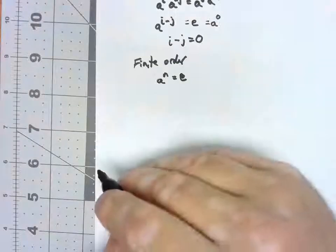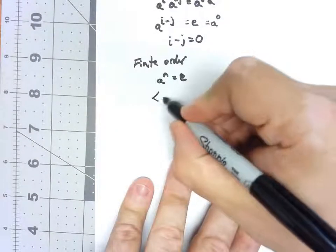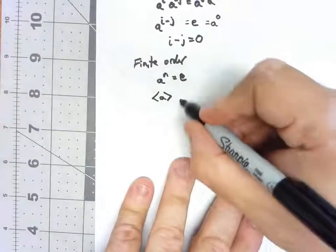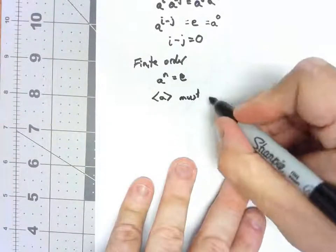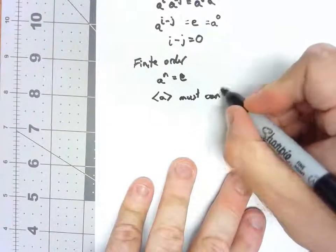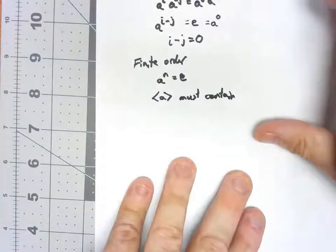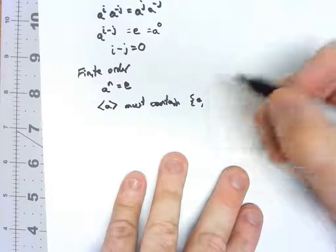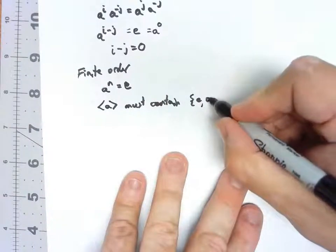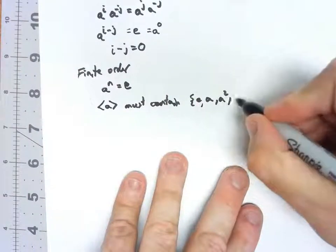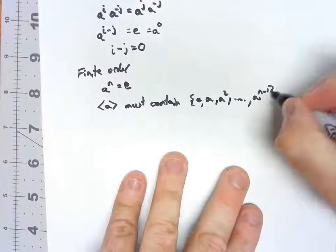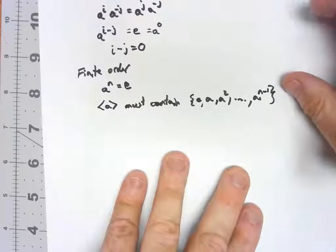So certainly by the definition of what that cyclic subgroup is, that must contain all powers of A. So it must contain E because that's A to the zero, A to the first, A squared, any power, but we're going to say it needs to go up to N minus one.